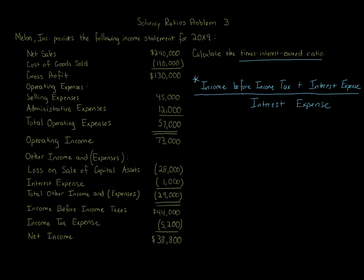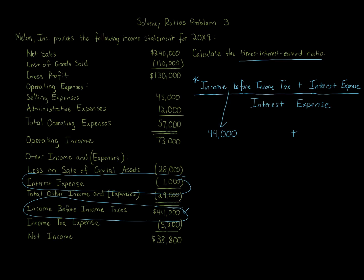Fortunately, on this income statement we have income before income taxes of $44,000, so we can plug that in as the first item in the numerator — $44,000. Then we add interest expense, which is $1,000, giving us $44,000 plus $1,000 in the numerator, all over the same $1,000 of interest expense in the denominator. That gives us $45,000 divided by $1,000, which equals 45 times.